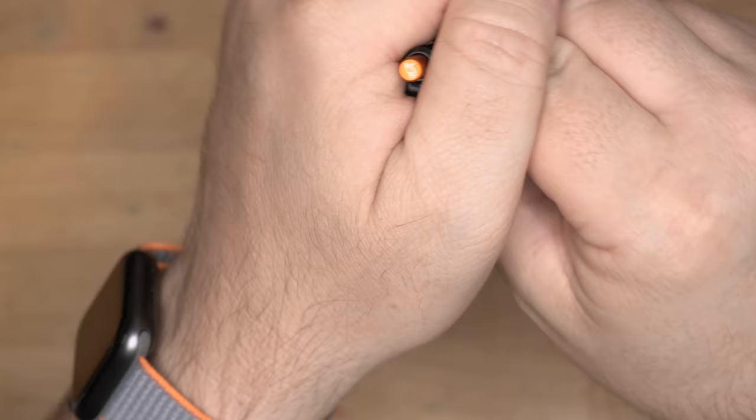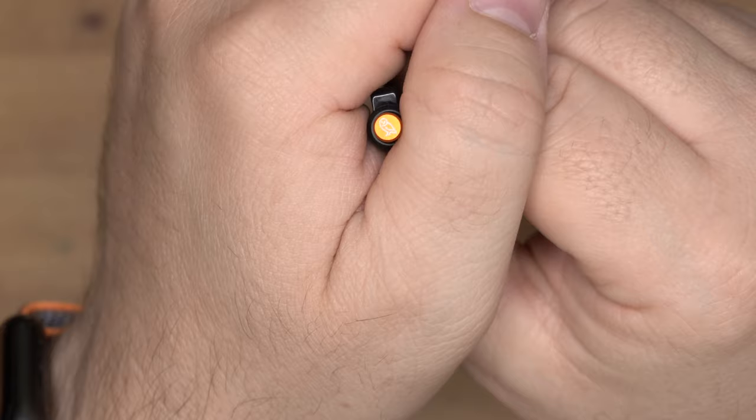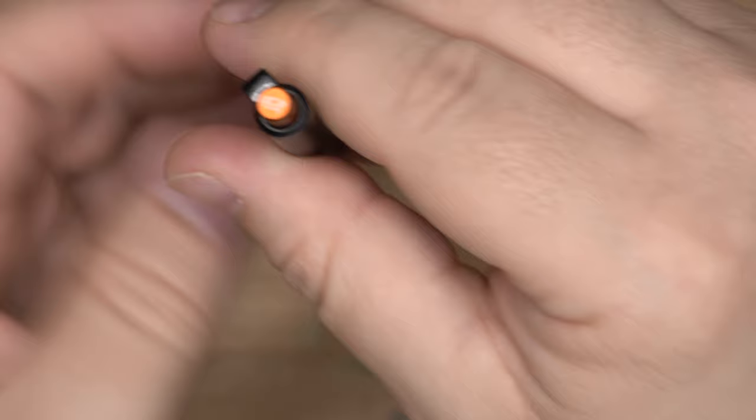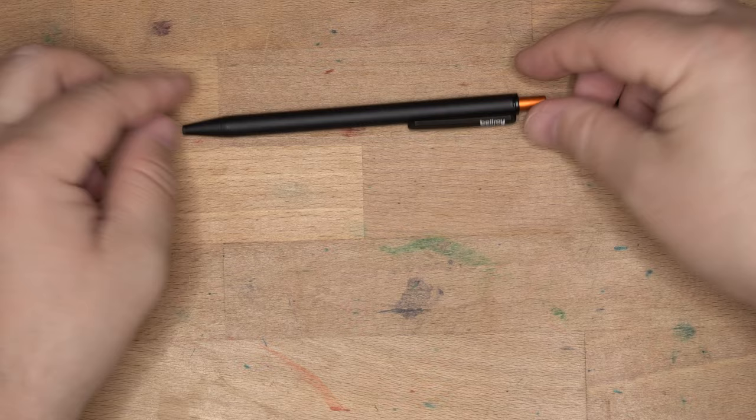That's about the only real branding on the pen aside from the top where they have the Bellroy owl. There we go. There's the owl. Look at that. I think that's cool. I really dig this aluminum knock, or this orange knock they have here. And I like the little white owl in it. I would be perfectly fine if they just did the owl, but I also totally get why they would put their name on it. I think it really stands out on this pen and I dig it.